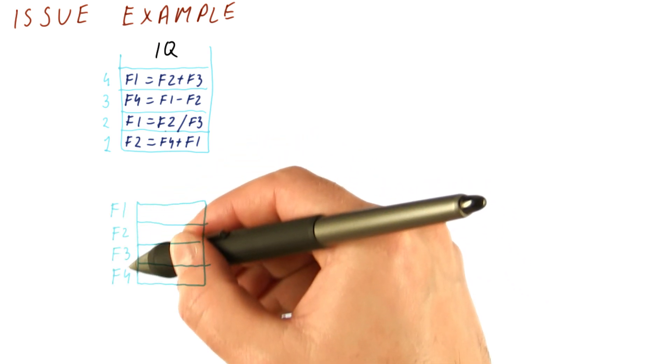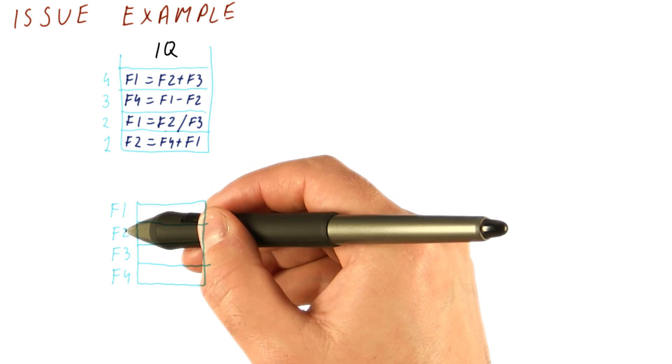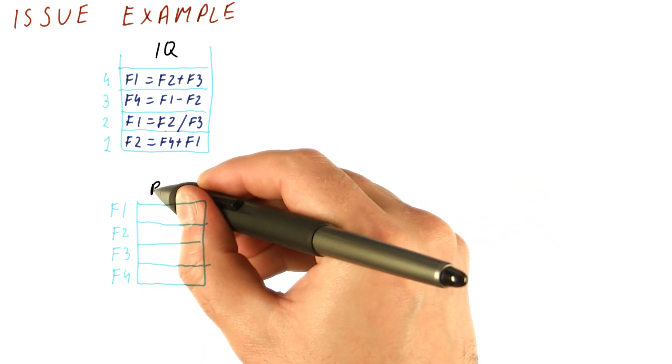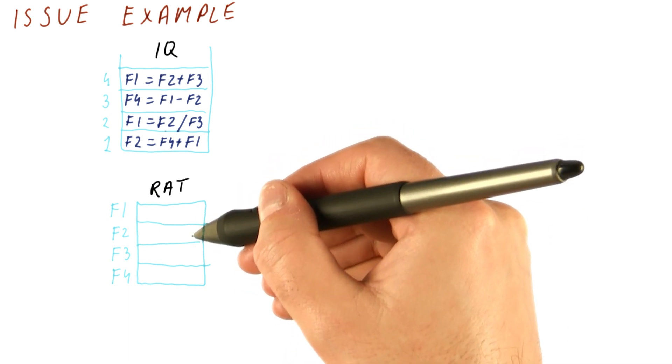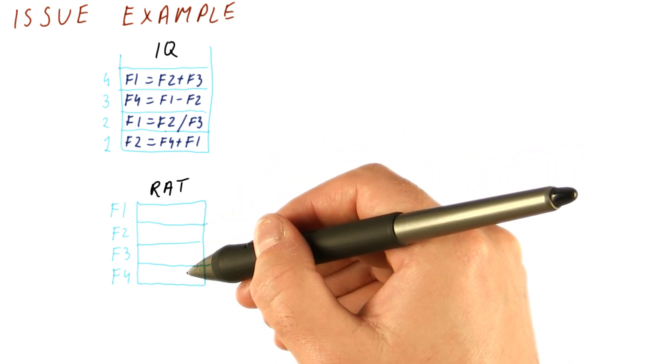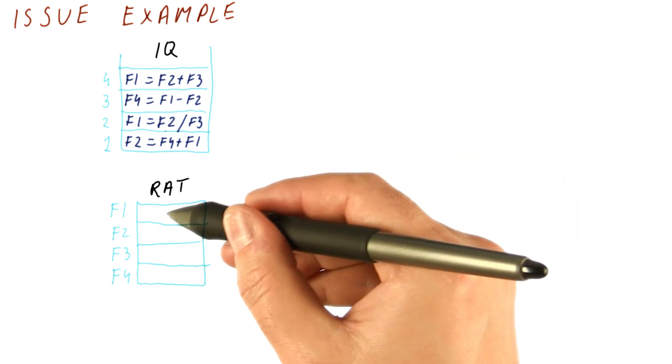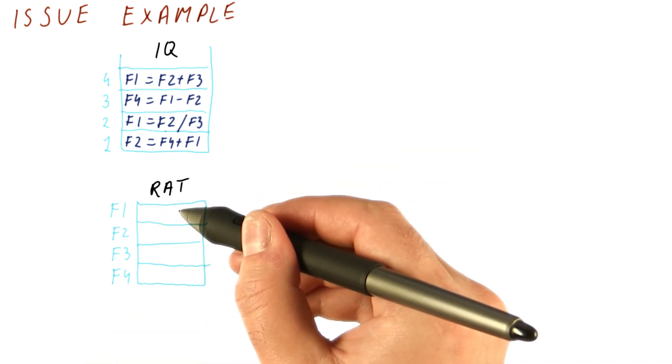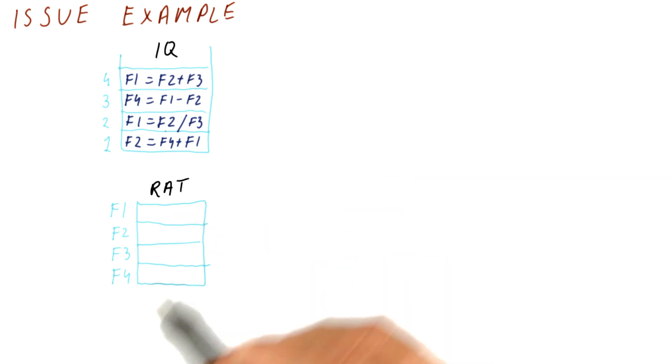Next, for each of the floating point registers, which we are going to name F1, F2, F3, and F4, there is a register alias table, or RAT, where we're going to keep which instruction is supposed to produce that register. If there is nothing here, that actually points to the register file. So if there is nothing here in F1, that means you can just find the value for F1 in the actual F1 in the register file.